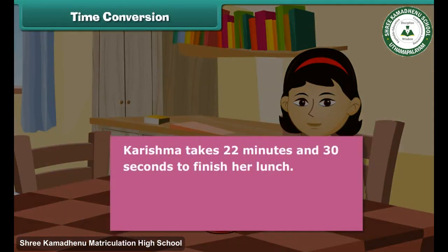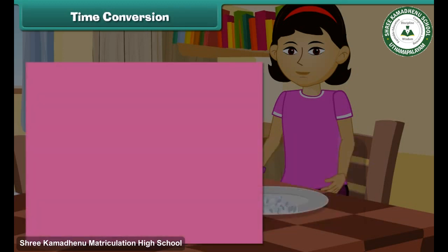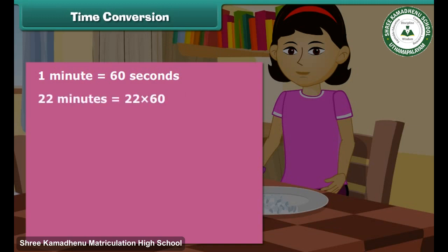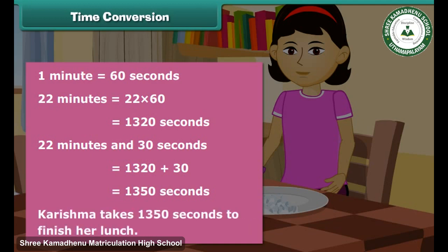Karishma takes 22 minutes and 30 seconds to finish her lunch. Express the time taken in seconds. 1 minute equals 60 seconds. 22 minutes equals 22 × 60, which equals 1320 seconds. 22 minutes and 30 seconds equals 1320 plus 30, which equals 1350 seconds. Therefore, Karishma takes 1350 seconds to finish her lunch.